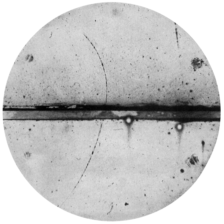Dirac acknowledged that the proton having a much greater mass than the electron was a problem, but expressed "hope" that a future theory would resolve the issue. Robert Oppenheimer argued strongly against the proton being the negative energy electron solution to Dirac's equation, asserting that if it were, the hydrogen atom would rapidly self-destruct. Persuaded by Oppenheimer's argument, Dirac published a paper in 1931 that predicted the existence of an as-yet-unobserved particle that he called an "anti-electron".